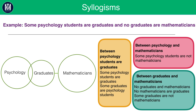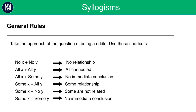These are general shortcut rules: when you see 'no' and 'no,' there is no relationship. 'All' and 'all' means they're all connected. 'All' and 'some' — no immediate conclusion. 'Some' and 'all' — some relationship. 'Some' and 'no' — some are not related. 'Some' and 'some' — no immediate conclusion. This is a very theory-driven section, so watch the video back and look over examples you were stuck on. I'd advise reading the e-books as well. Hopefully syllogisms will be a lot more straightforward from now on.